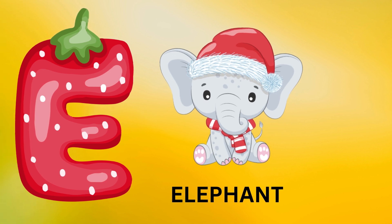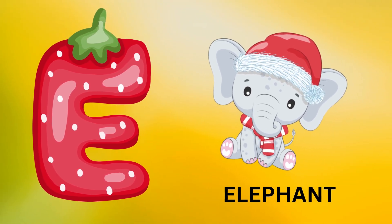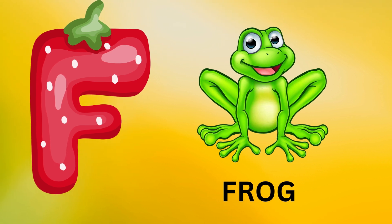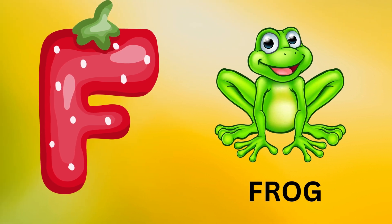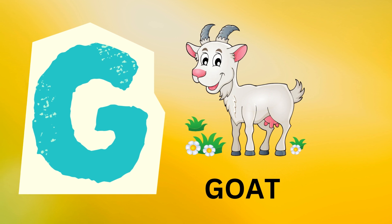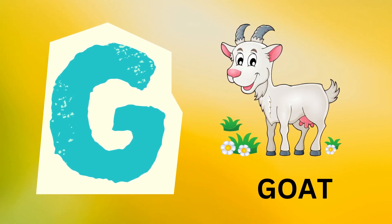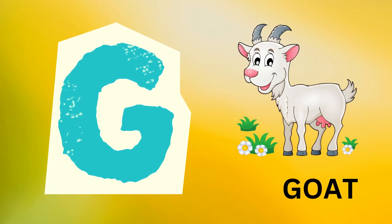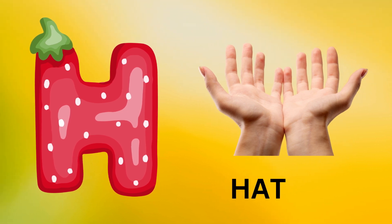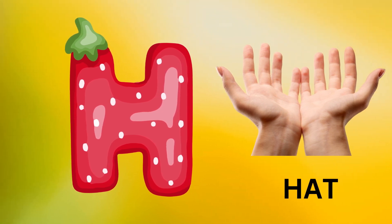E is for elephant, e-e-elephant. F is for frog, f-f-frog. G is for goat, g-g-goat. H is for hand, h-h-hand.